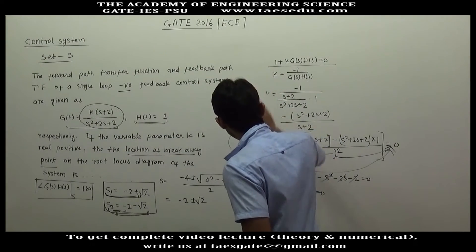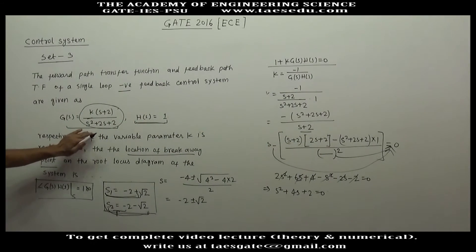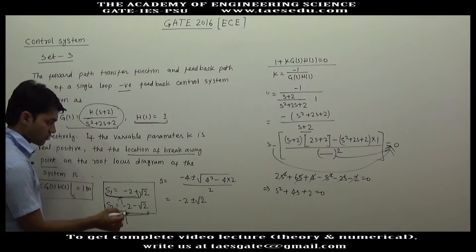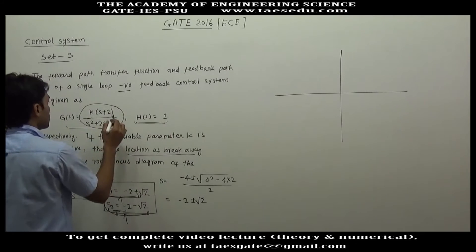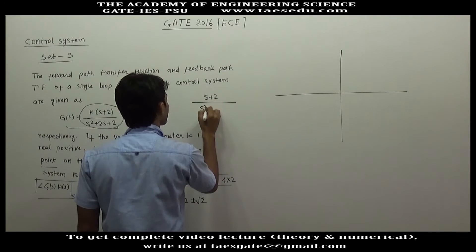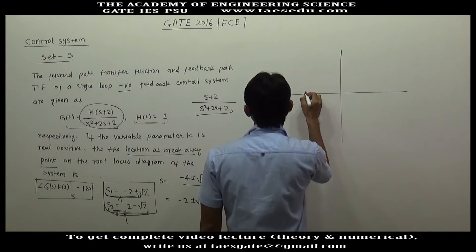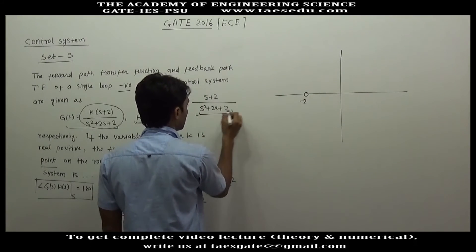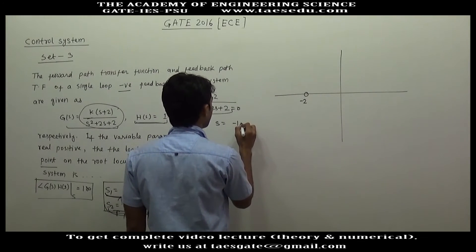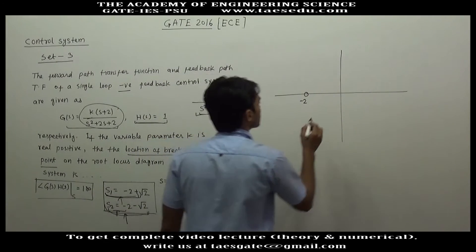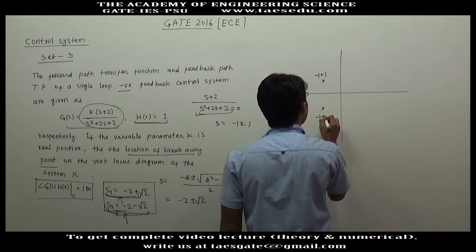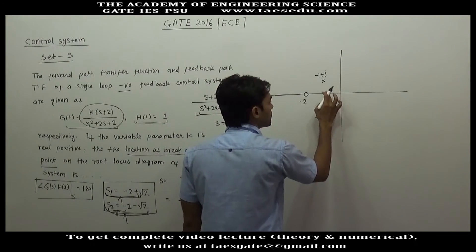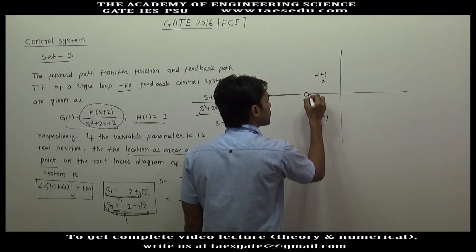Alternatively, if you are familiar with root locus sketching, you can quickly observe the nature of the root locus. G(s)H(s) = (s plus 2)/(s² plus 2s plus 2). The zero is located at s = -2, and the poles are at s = -1 plus j and s = -1 minus j.